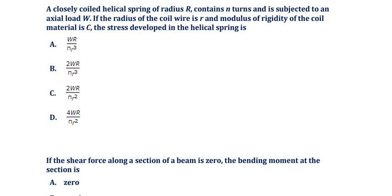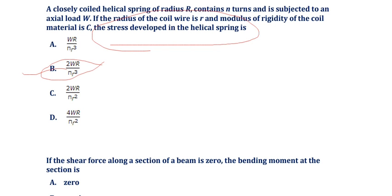A closely coiled helical spring of radius R contains n turns and is subjected to an axial load W. The radius of the coil wire is r and the modulus of rigidity is C. The stress developed in the helical spring is 2WR divided by πr³, where W is the axial load, R is the helical spring radius, and r is the coil wire radius.